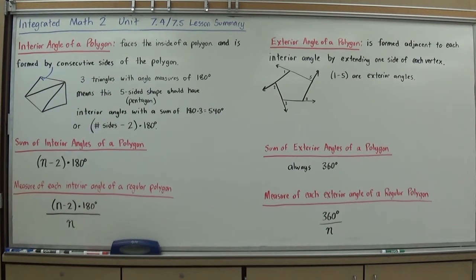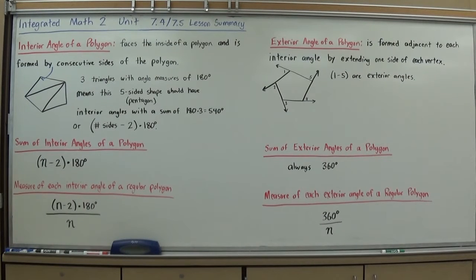You should have the same number of interior angles for a shape as you do sides. So if it has three sides, it has three interior angles; four sides, four interior angles, etc. And through working in the book, you actually experiment with a lot of these and kind of develop a formula.